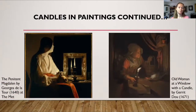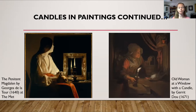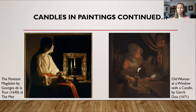The painting on the left is of the Penitent Magdalene by Georges de La Tour, from about 1640, at the Met. You can see it's a simple candle holder holding a candle in front of a mirror. On the right is of an old woman at a window with a candle, painted in 1671 — again, just a simple handheld candlestick holder with a candle.